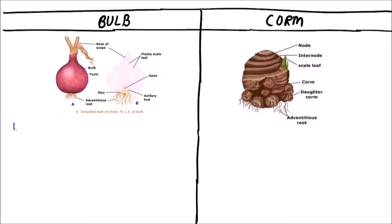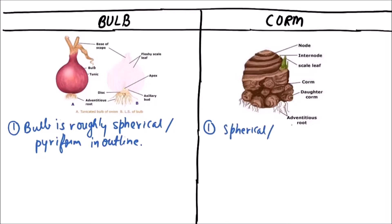First of all we'll discuss the bulb. Bulb is roughly spherical or pyriform in outline. While a corm may be spherical or elongated vertically.